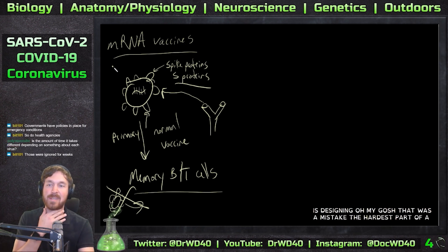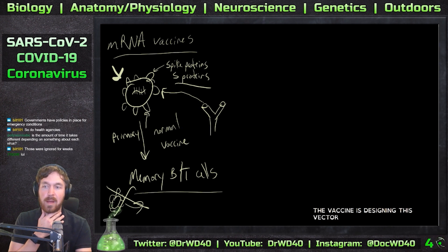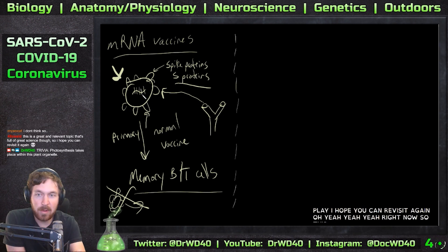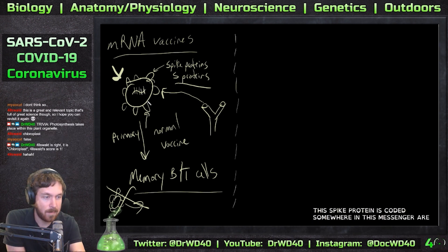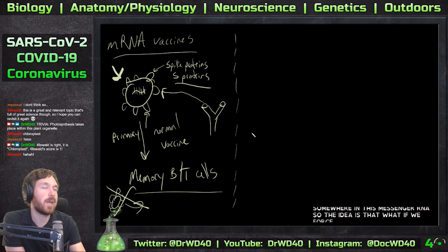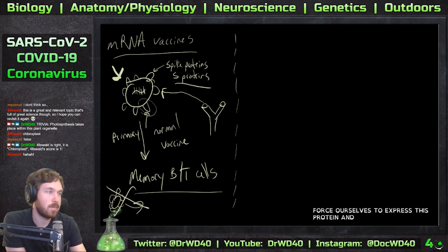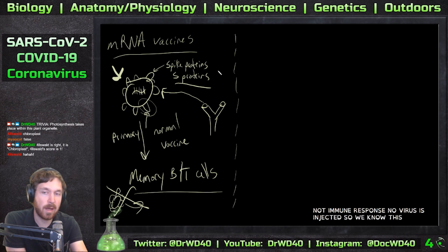The hardest part of the vaccine is designing the vector — how do we get that into the cell? The spike protein is coded somewhere in the messenger RNA. The idea is: what if we force our own cells to express this protein? Then our body can mount an immune response, and no virus is injected at all.